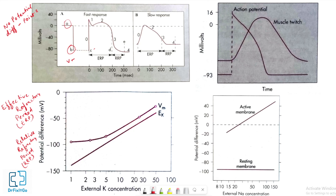The potential difference, denoted as Vm, across the cell membrane: the potential of the interior of the cell is about minus 90 millivolts lower than the surrounding medium.